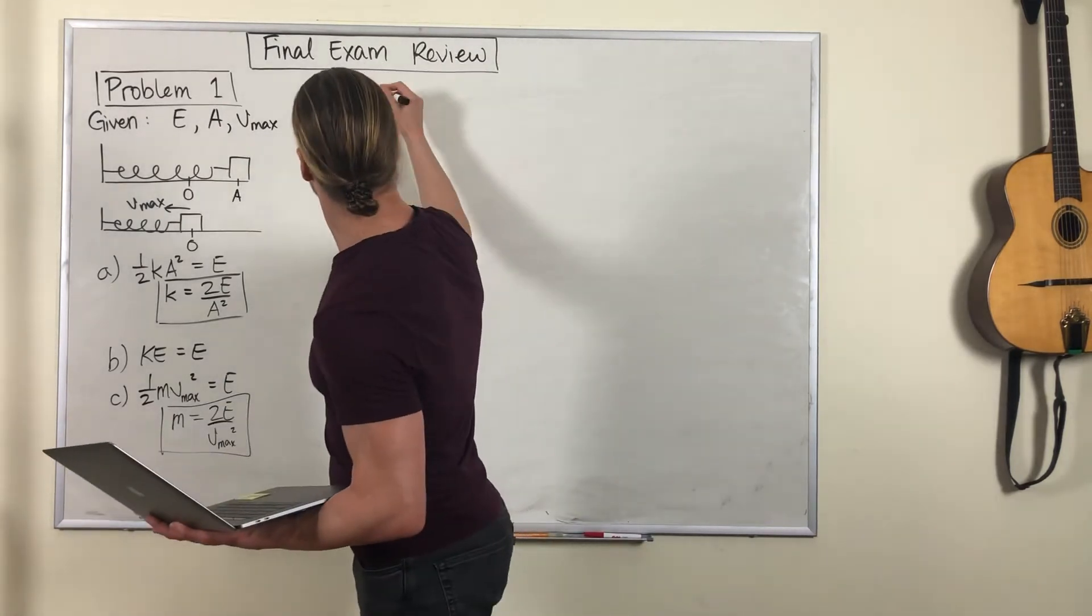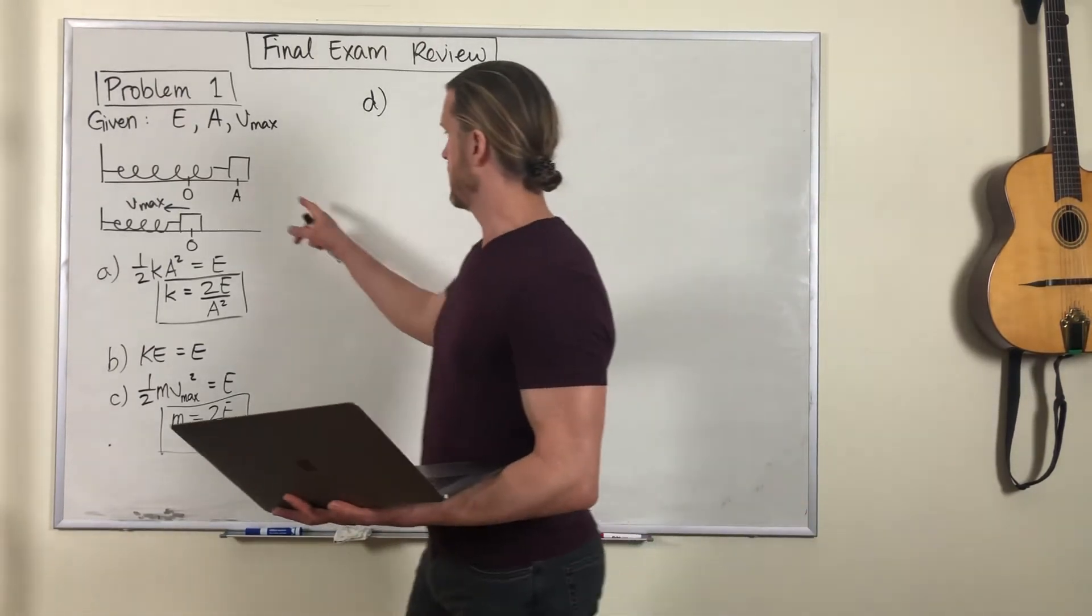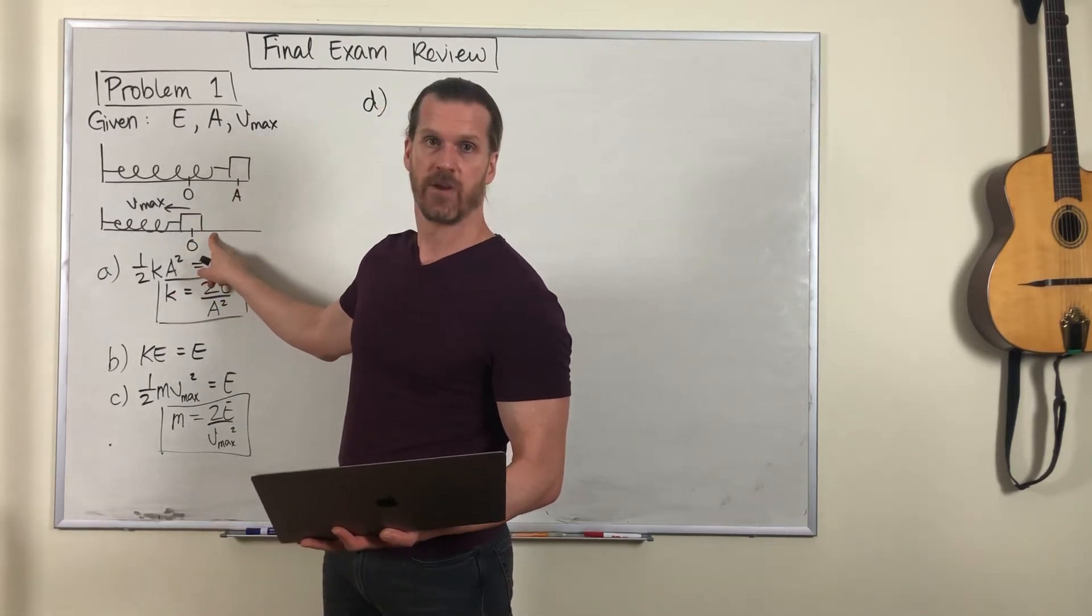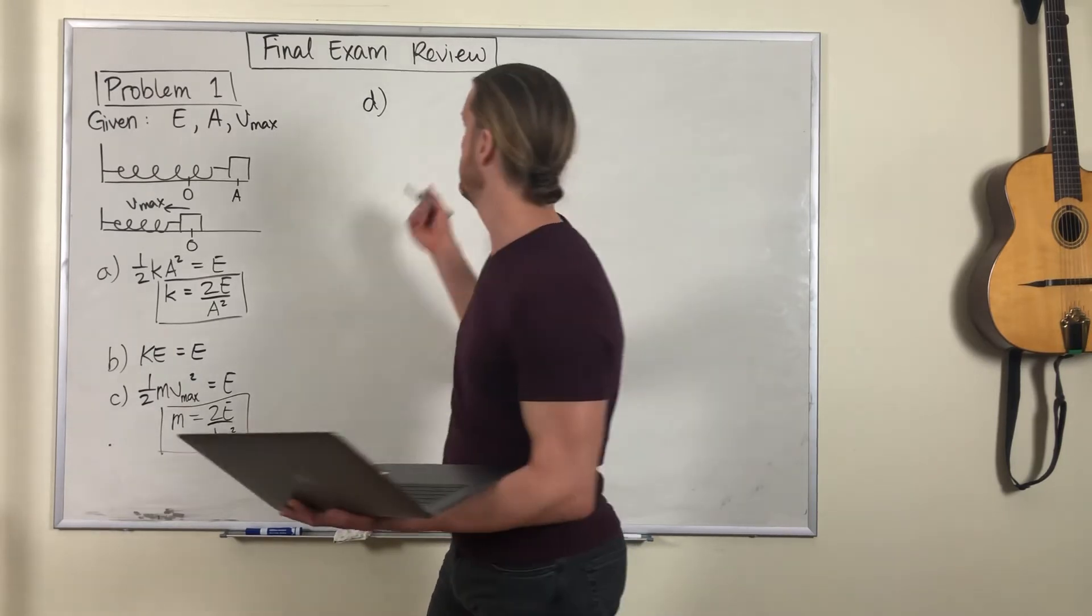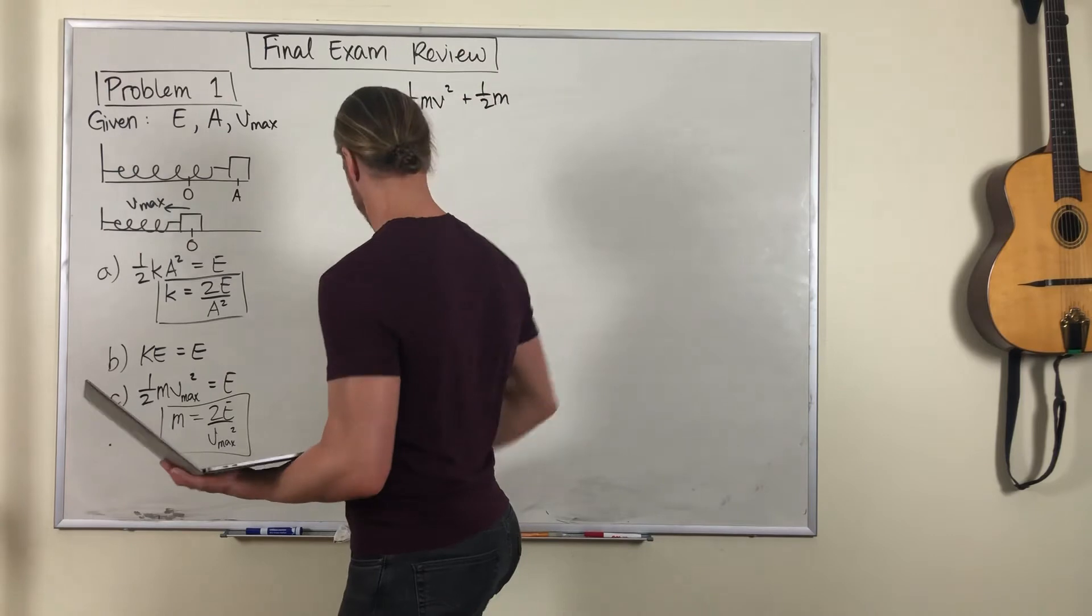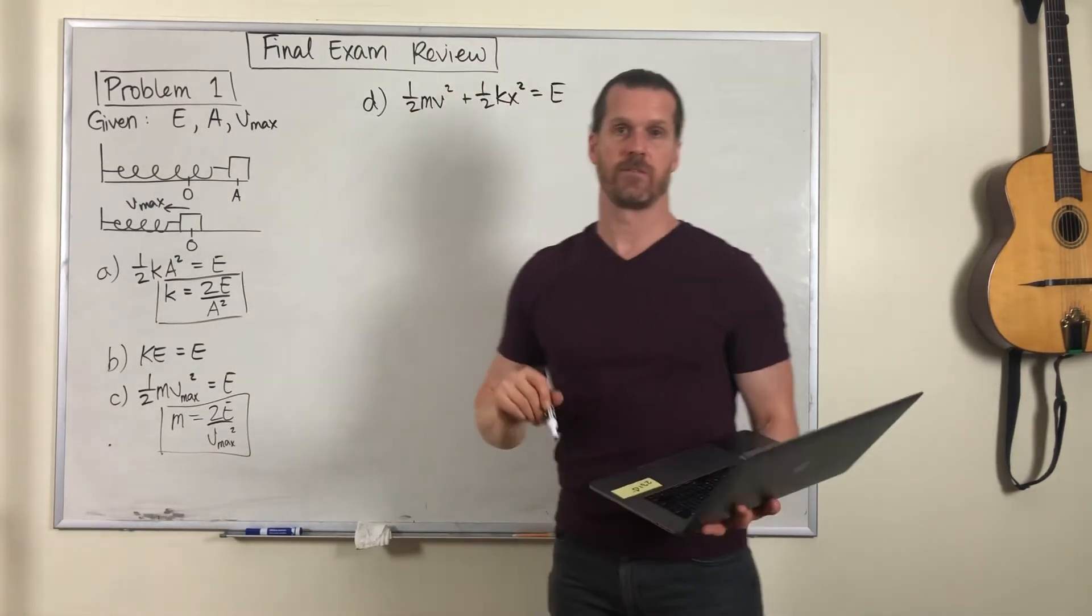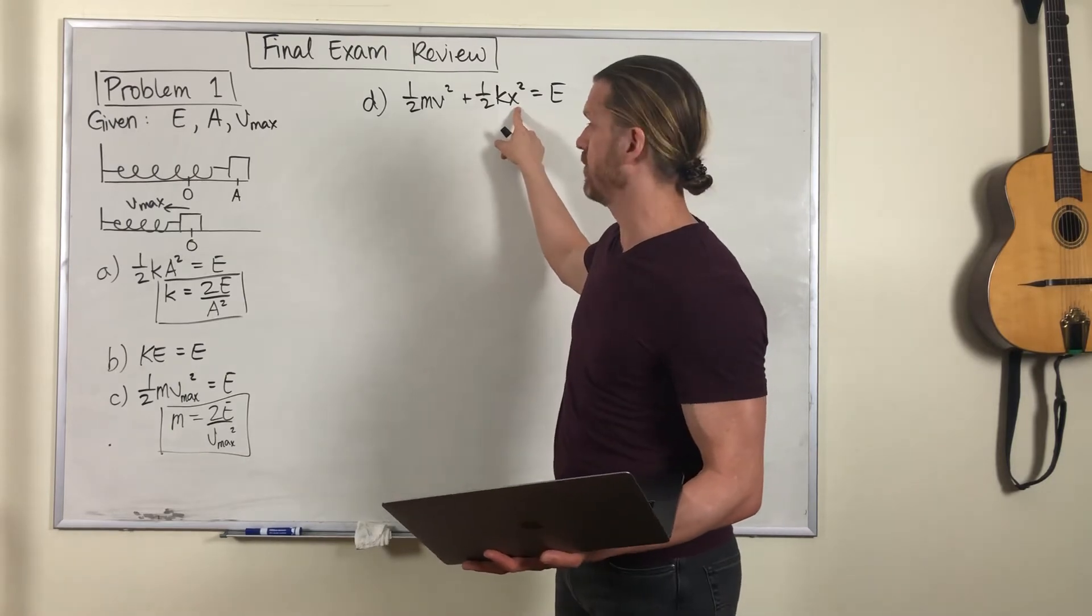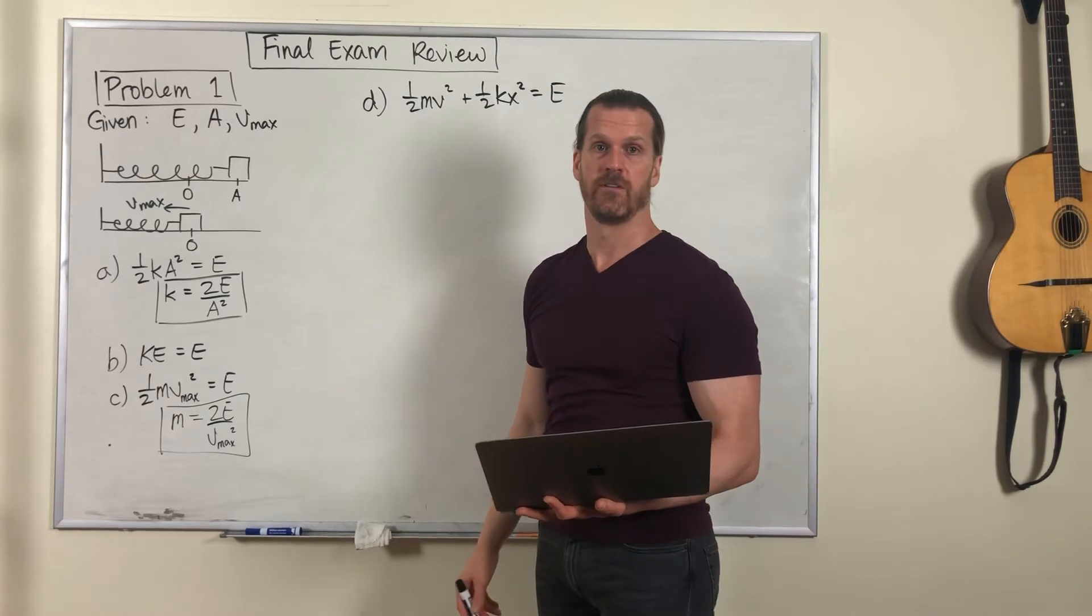Part D. What is the speed of the block when the displacement is something? In other words, the block is now somewhere in between its starting point and that equilibrium point, somewhere around here. That means it has a combination of potential and kinetic energy. But that combination still equals the total, still equals that value E. And we are given this x value. And we know from the rest of the problem, the values for k, m, and E. And so we can solve for v at that point.